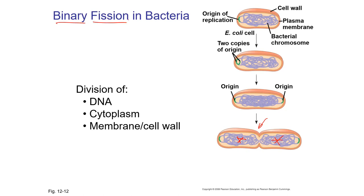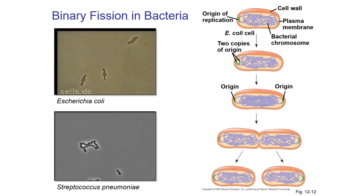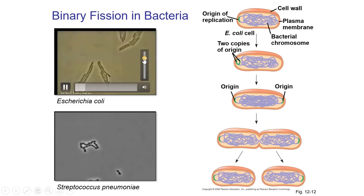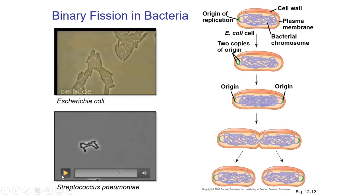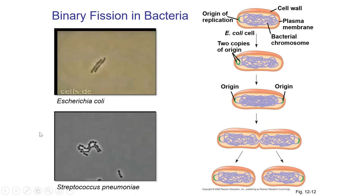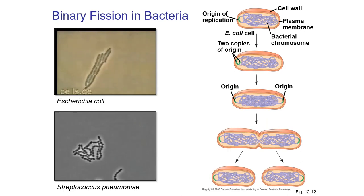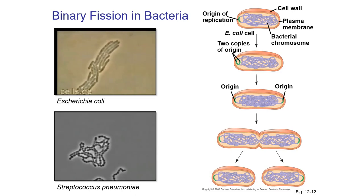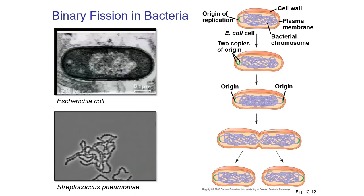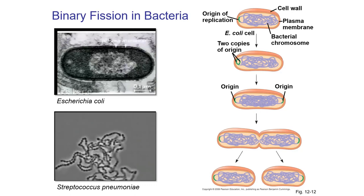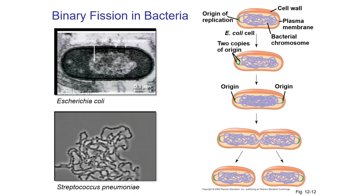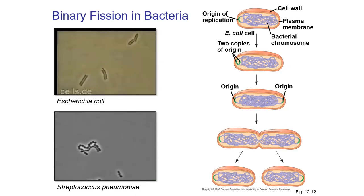That's binary fission. Binary means two, fission means splitting in two. You can see in these videos the cells elongate and split, elongate and split. For E. coli, very easily in the lab — 20 to 30 minutes — these things can reproduce very, very rapidly. On the bottom we have streptococcus; coccus means they're circles, so the process is slightly different but really the same basic idea.